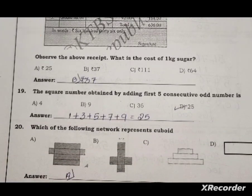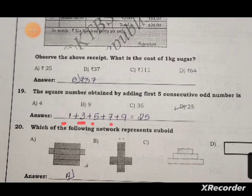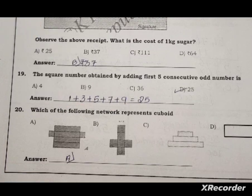Question nineteen: the square number obtained by adding the first five consecutive odd numbers. The first five consecutive odd numbers are 1, 3, 5, 7, 9. Their sum is 25. The answer is 25. Question twenty: which of the following net represents a cuboid? The answer is option A.